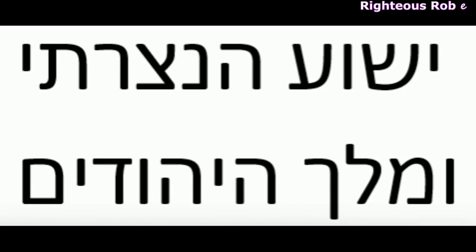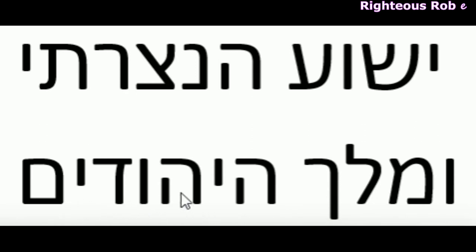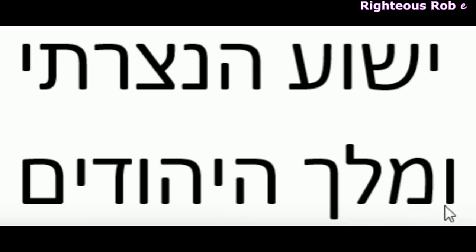Written in Hebrew on the sign above Jesus on the cross: Yeshua, Jesus, HaNazari, King, the HaYehudim of the Jews. The first letter of each of these words — the acronym — includes the Tetragrammaton: Yud, Hay, Vav, Hay.